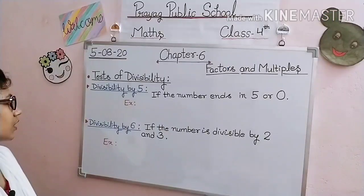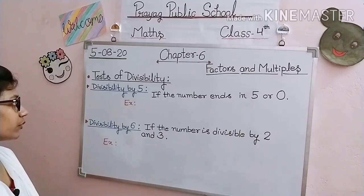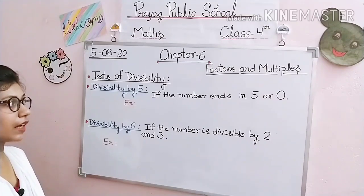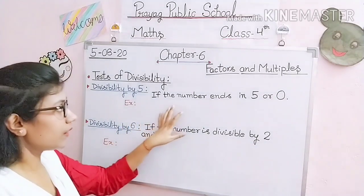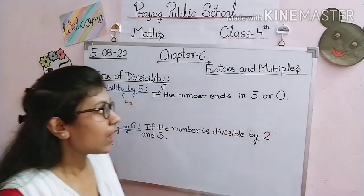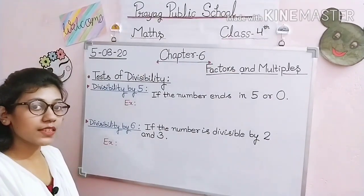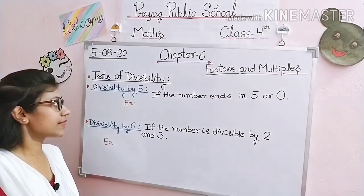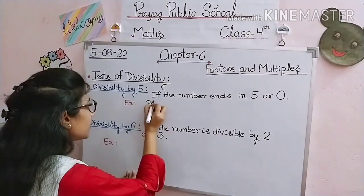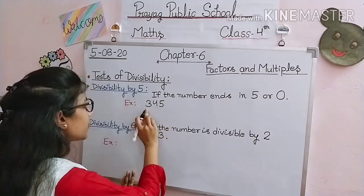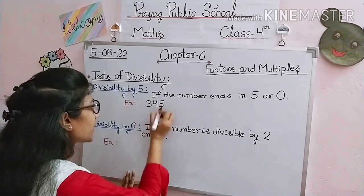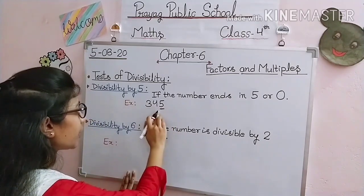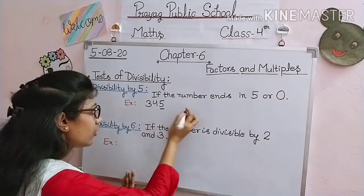Today our first topic is divisibility by 5. How do we check whether any given number is divisible by 5? The rule is: if the number ends in 5 or 0, then the given number is divisible by 5. For example, 345 — this number ends at digit 5 on the units place, so 345 is divisible by 5.